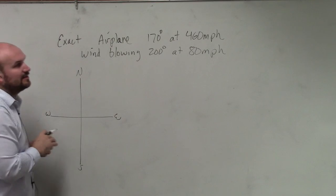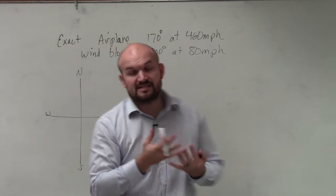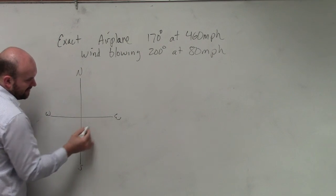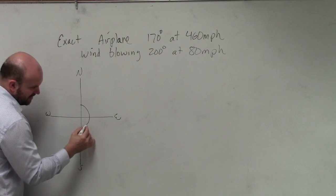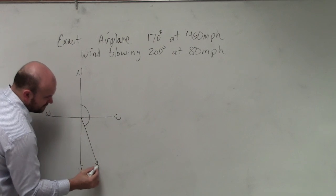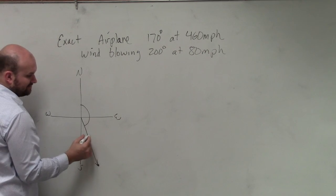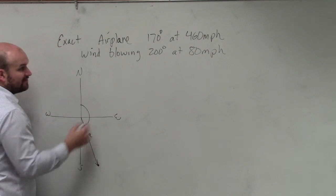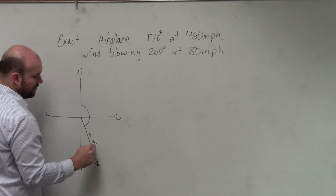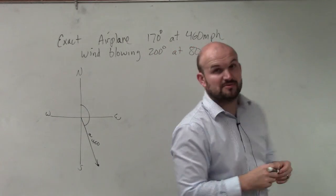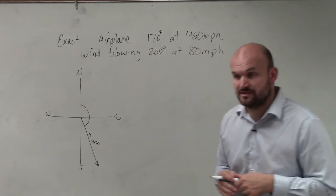Now, remember, it says a bearing of 170 degrees. That's going to be from due north. So that's going to be somewhere, well, halfway around circle is 180. So 170 is going to be like right there. And then we'll go down, right? And let's call this vector A. Vector A has a magnitude of 460 miles per hour.